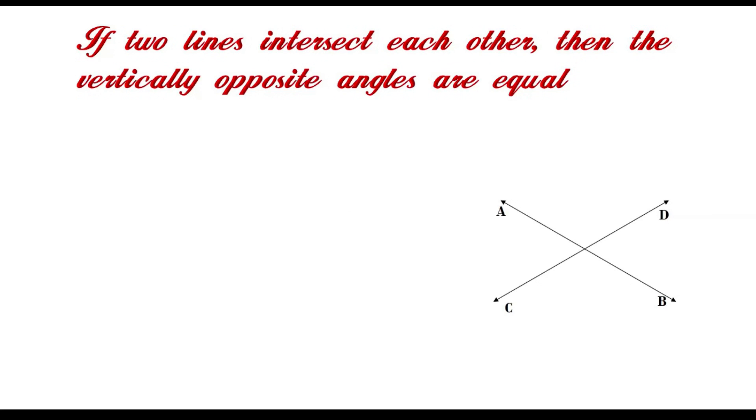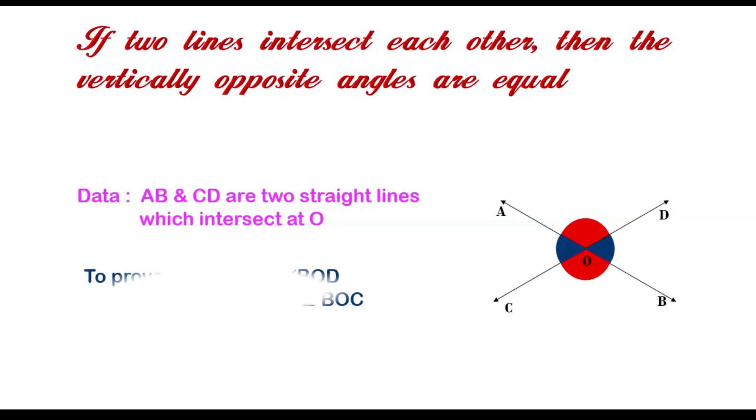Let AB and CD be two lines intersecting at point O, forming four different angles. Angle AOC and angle BOD, angle AOD and angle BOC are two pairs of vertically opposite angles. Here we have to prove angle AOC equals angle BOD and angle AOD equals angle BOC.